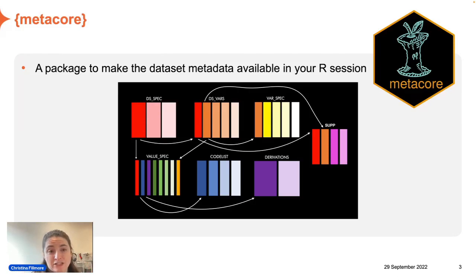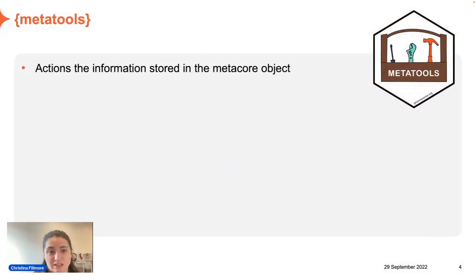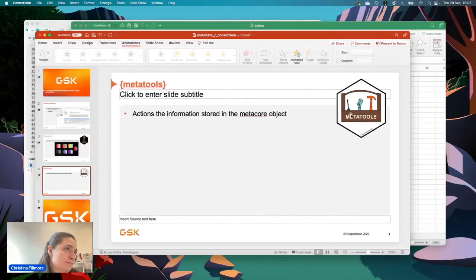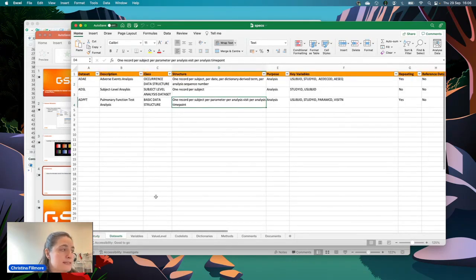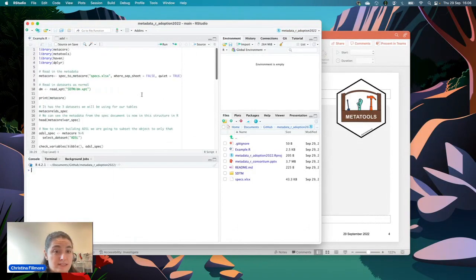Metacore is a package that creates this object and has some readers, but it doesn't really do anything with the metadata itself. So we built a companion package called metatools, which does the interesting stuff — it looks at how to action and build out the operations you'd want to perform on the metadata within your metacore object. Now let's demo this using a Pinnacle 21-type specification to build an example ADSL dataset.